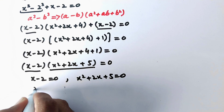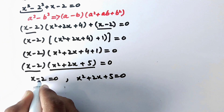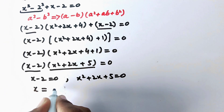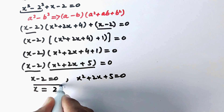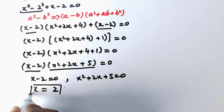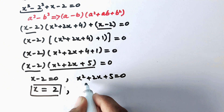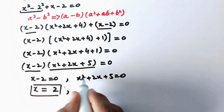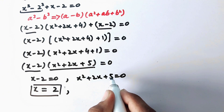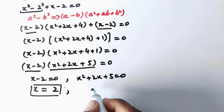From the first factor, x minus 2 equals 0, so x equals 2. For the second factor we have a quadratic equation, and we will use the quadratic formula to solve it.